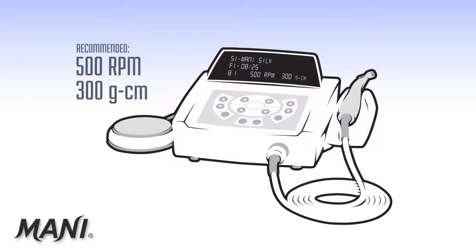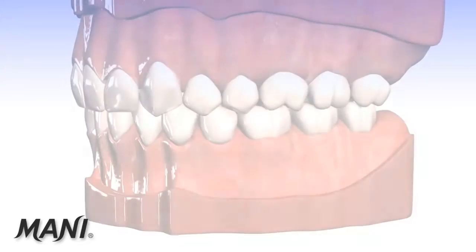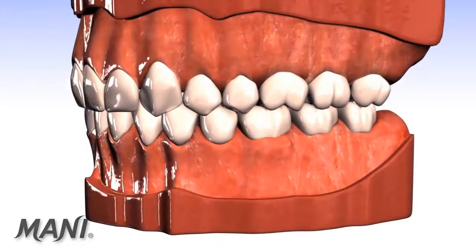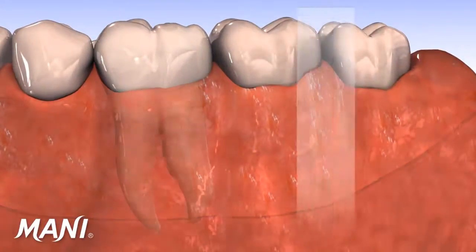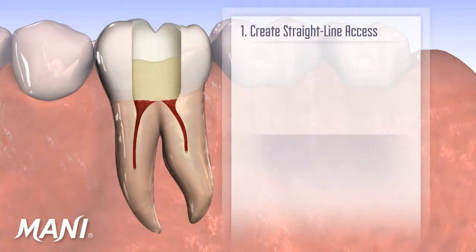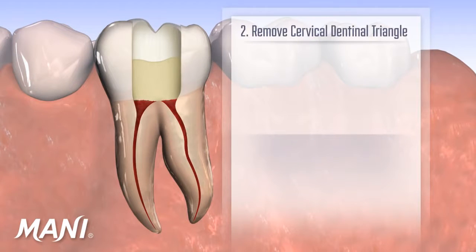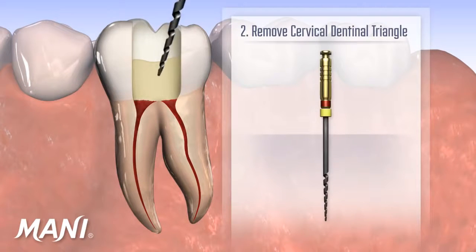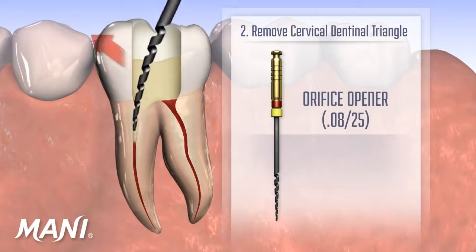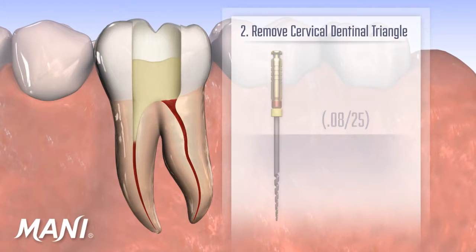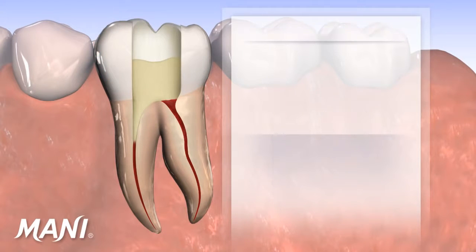Using Mani SILK clinically, the clinician first creates straight-line access. The cervical dentinal triangle is removed with the Mani SILK orifice opener using a brushing motion up and away from the furcation.